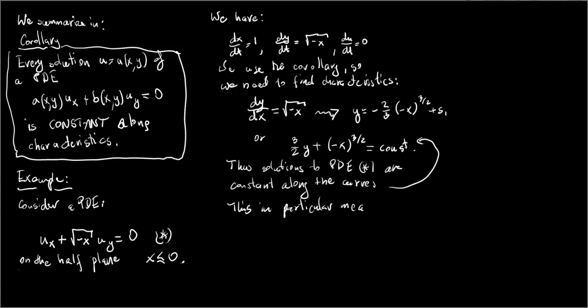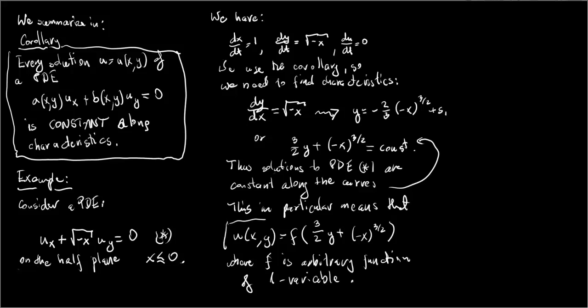This in particular means that the general solution to our PDE is U equals F of 3/2 y plus minus x to the 3/2 power, where function F is an arbitrary function of one variable. So applying our corollary we found the general solution which is this one to our PDE which is here.